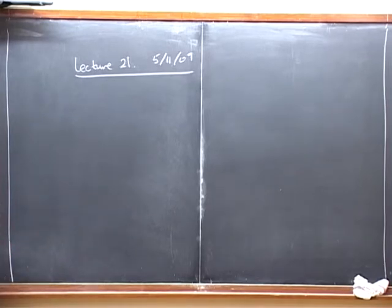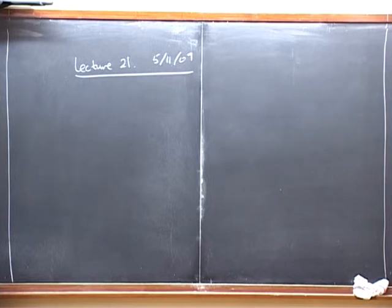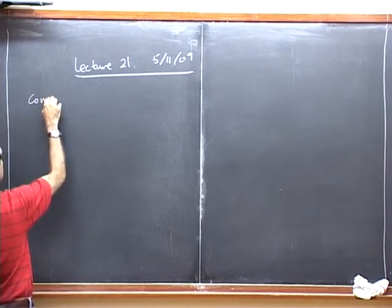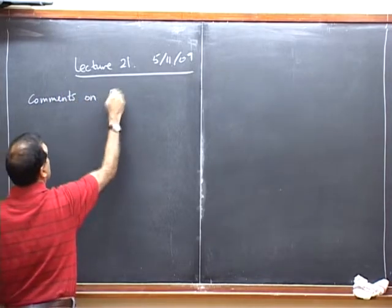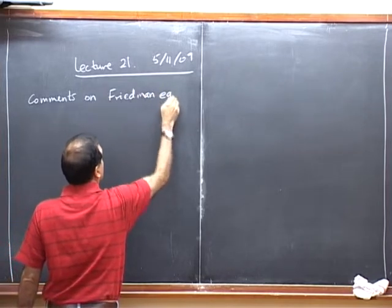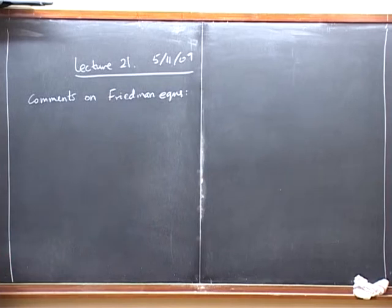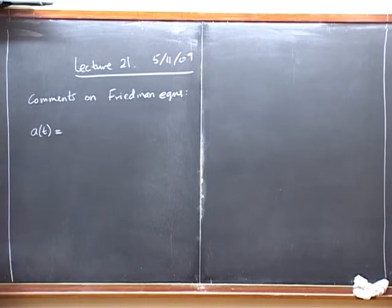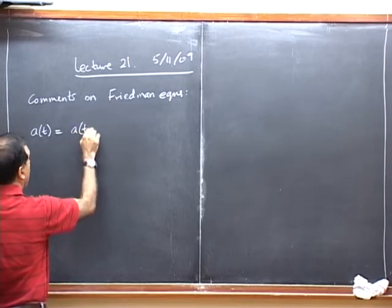Let me do one thing now that I should have done last time. So last time we did the cosmological lecture. Let me now make a few comments about various aspects of the Friedmann equations. We will try to use them to get out whatever physical consequences we can. A preliminary comment is the following: A of t is the scale factor, which is the quantity of most interest to us when we discuss the cosmological metric. And A of t, if it is slowly varying, can be expanded as a Taylor series.